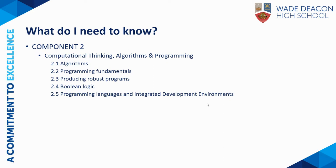Next up we have Component 2. It's focused on computational thinking, algorithms and programming, and consists of short and medium answer questions. It's split up into two halves. Section A assesses your knowledge and understanding of computer science concepts, using a coding or algorithmic approach to answer them.